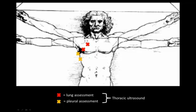The red X's represent lung assessment — you're assessing the parenchyma. The orange indicates more pleural-based assessments. The combination of them really represents a thoracic ultrasound, in this case just of the right hemithorax, and that would be a typical scope of examination for a patient with undifferentiated respiratory failure or assessment of their respiratory failure.